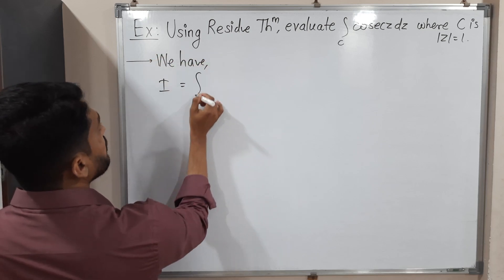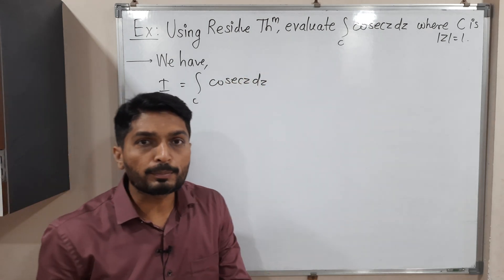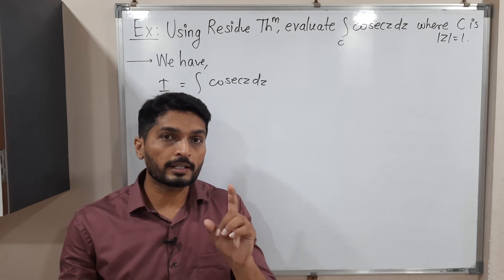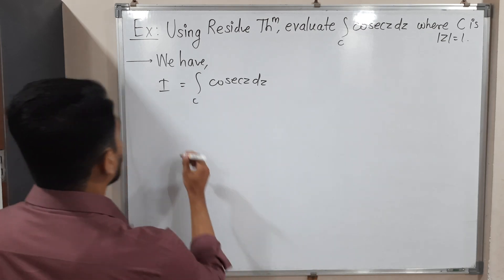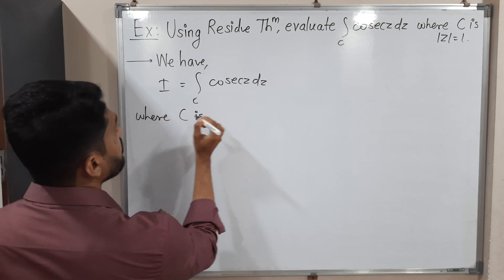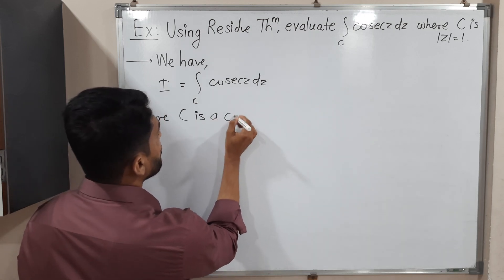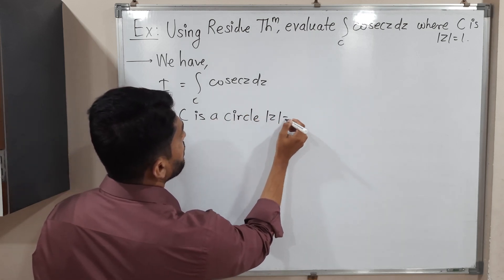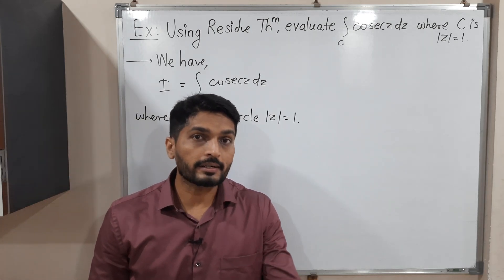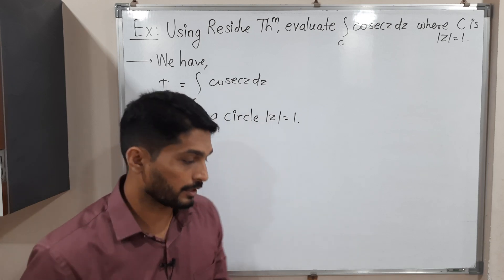The given integral is the integration over C of cosec(z) dz. The most important thing is the curve C, so let us draw that curve first and then solve the remaining part of our problem. C is a circle with equation |z| = 1. To draw the circle we need to know its center and radius, which we can obtain by comparing with the standard form.